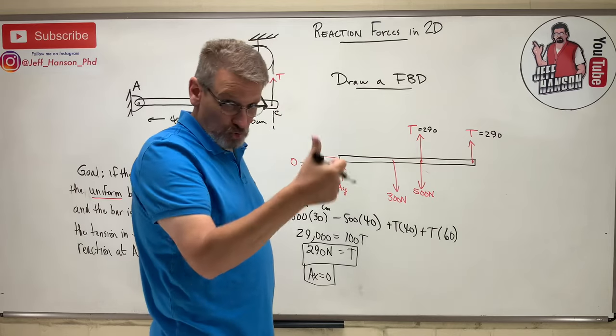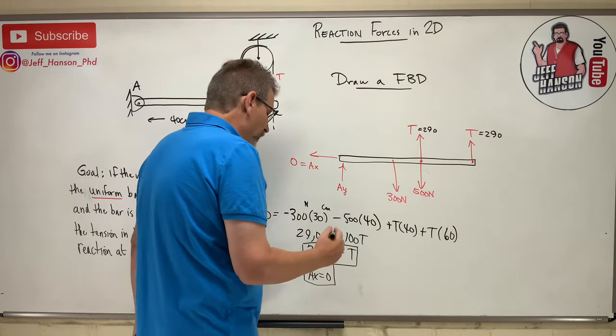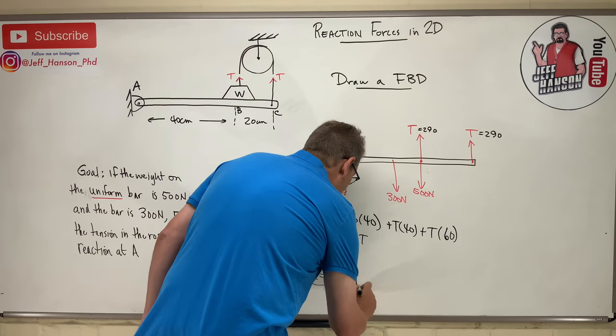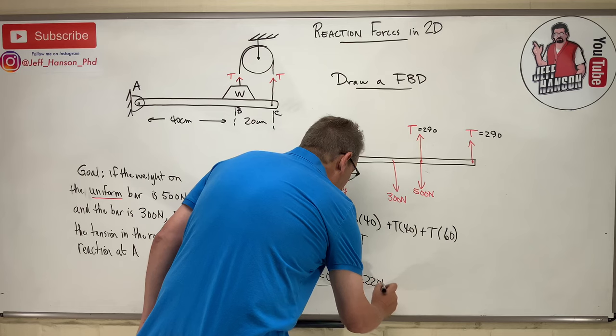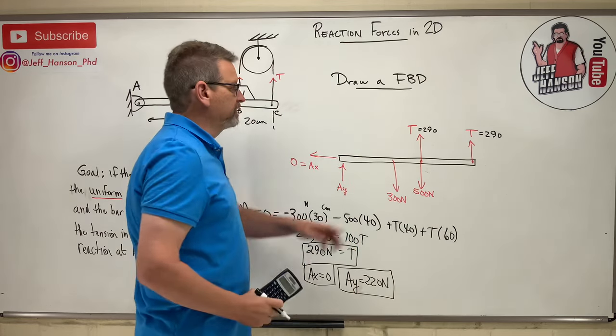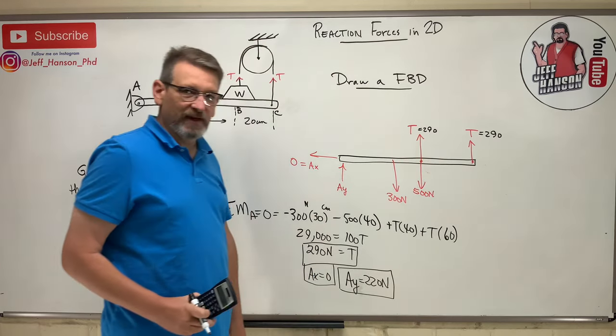So if 220 is down, what does Ay have to be? 220 up, right? And that's the sum of the force in the Y. That's what we're doing there. We're kind of getting to the point where we're doing it in our head, aren't we? So Ay equals 220 Newtons.